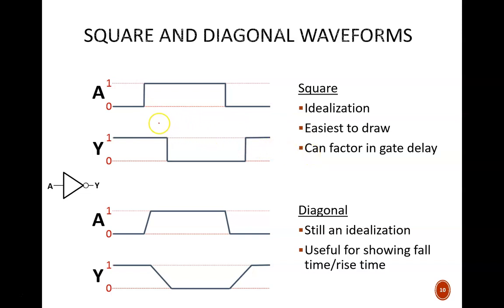For example, here we have a not gate with input A and output Y. At first, A equals 0, and so Y equals 1. Then A changes to 1. Some time later, Y drops down to 0. This gap in between those changes is the gate delay. We can see a similar delay in the next change.